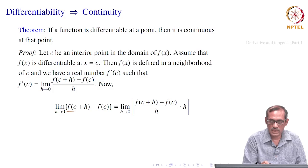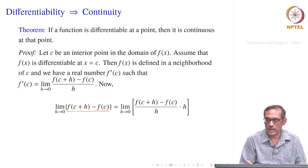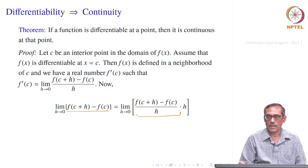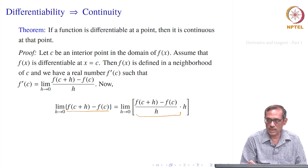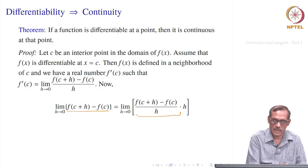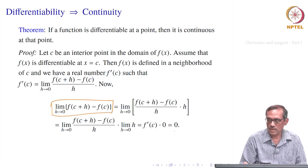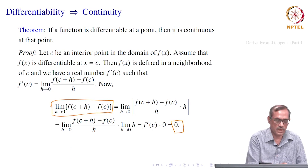We have f(c + h) − f(c) = [f(c + h) − f(c)]/h · h. Taking limits on both sides: the first factor's limit is f'(c) and the second factor's limit is 0, so the product is 0. Therefore, lim(h→0) [f(c + h) − f(c)] = 0, which is precisely the definition of continuity. So f is continuous at c.